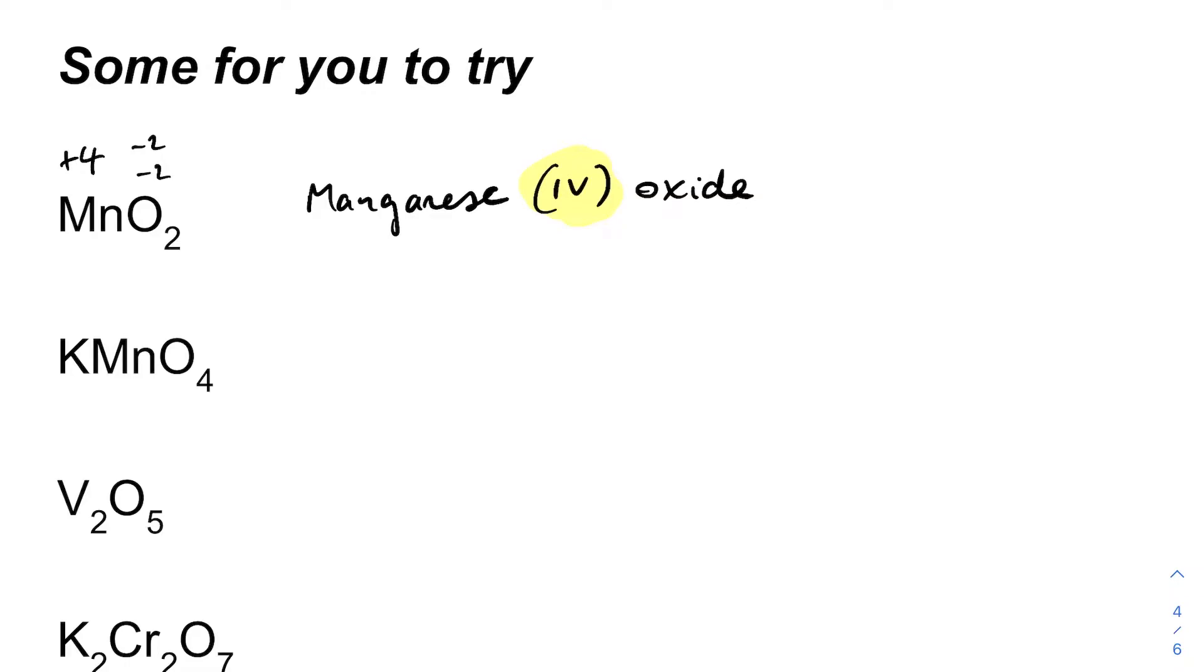Moving on to the next one, so we've got four O's minus two each. So just write four minus twos there, so that's minus eight. All together, we've got a potassium, so that's a group one metal, so that's in the rules, plus one for that. So to keep this whole thing neutral, the manganese needs to be plus seven. So this one's called potassium manganate, because it's manganese with oxygen, Roman VII.